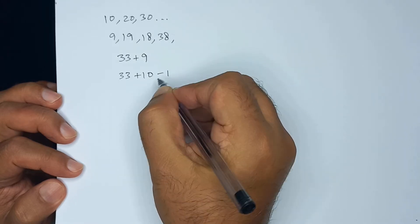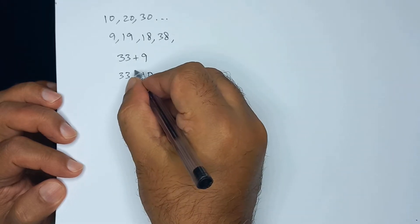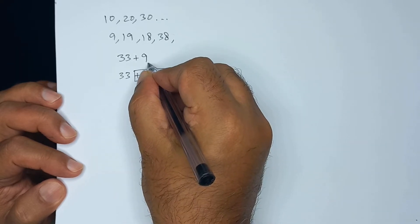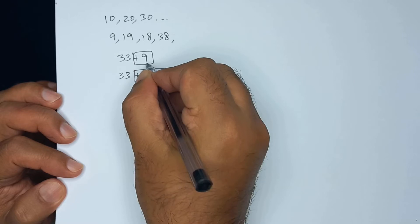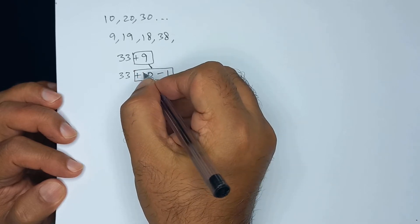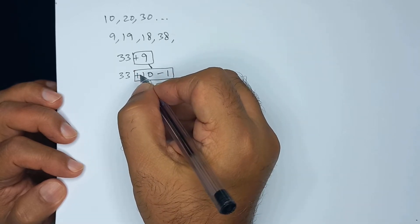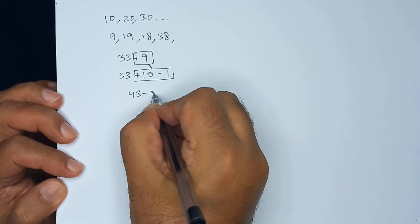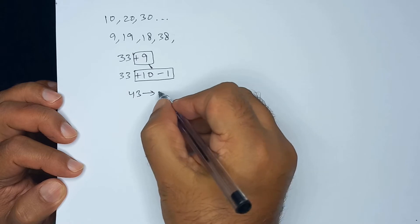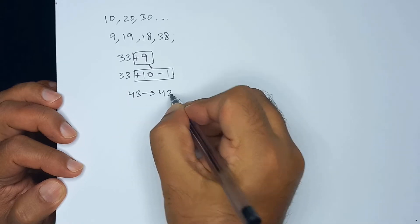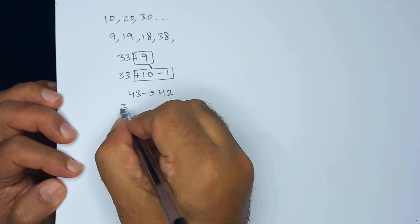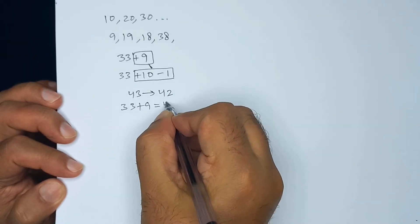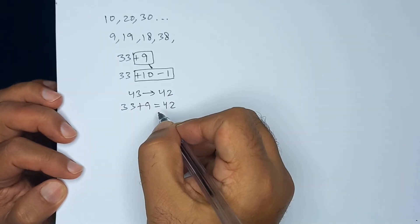So, minus 1 here. This plus 10 minus 1 is equal to this plus 9. It's the same thing. So, adding 10 to 33 gives us 43 and then taking 1 away leaves 42. So, 33 plus 9 is equal to 42.